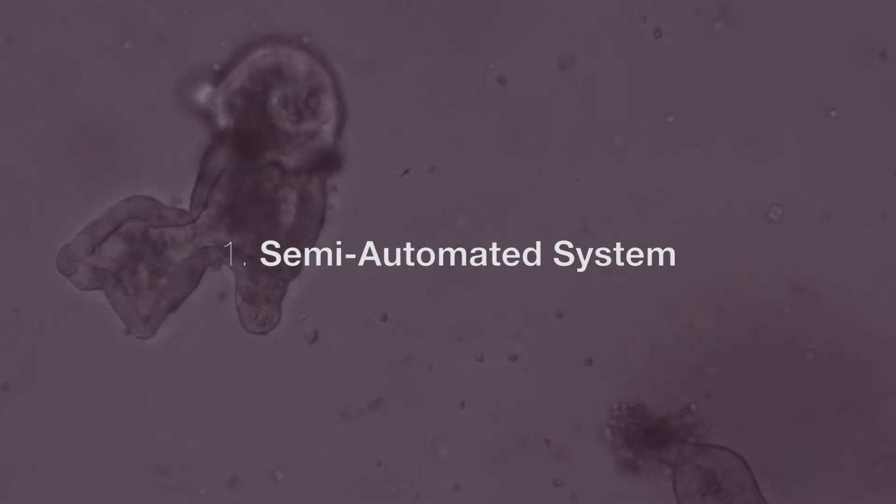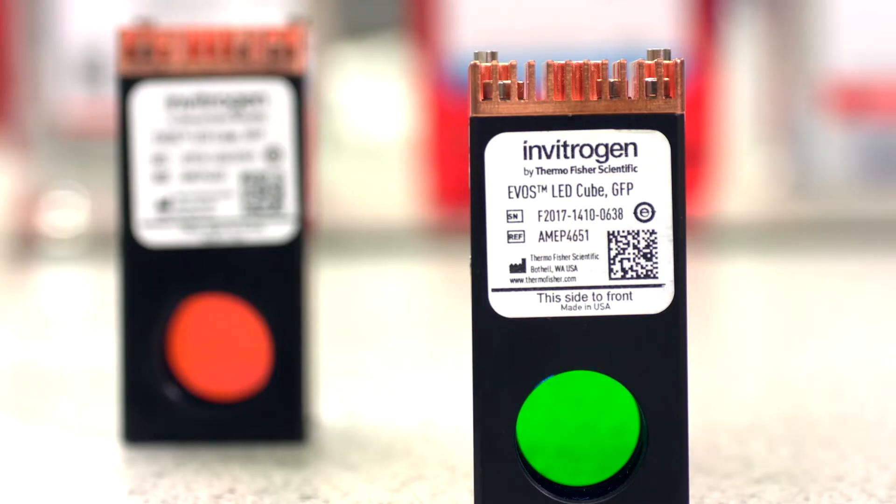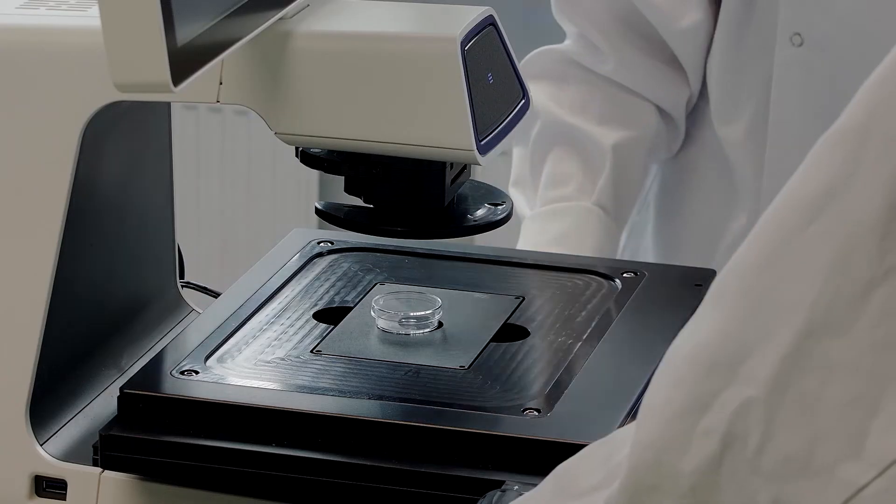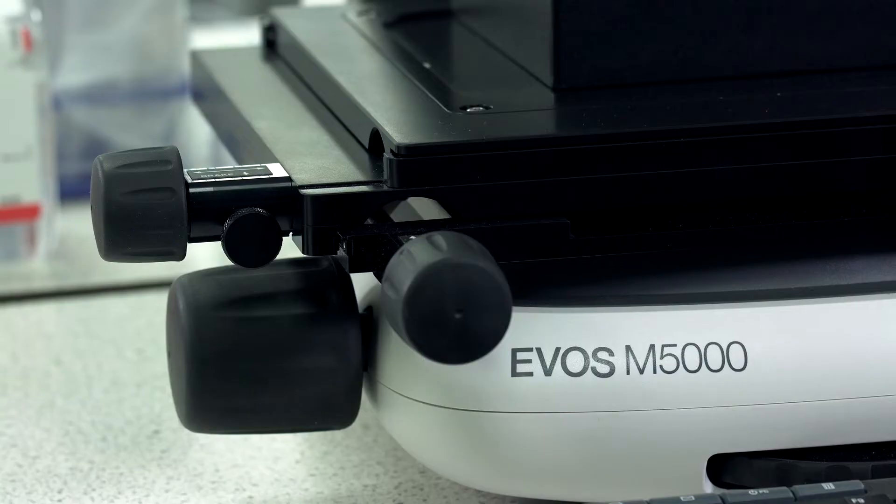It's a semi-automatic system so you can for example choose different filter cubes that you want to have imaged and just press start and it will do the job for you. You don't have to intervene with it anymore which is great because otherwise every time you touch the microscope there's a danger of you moving your cells around.